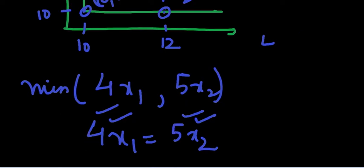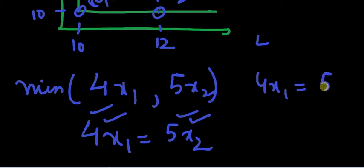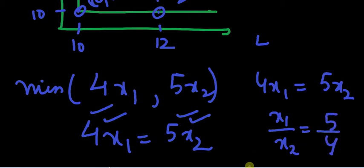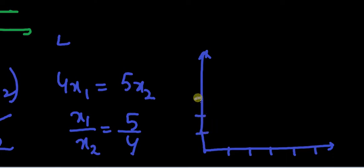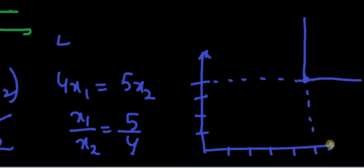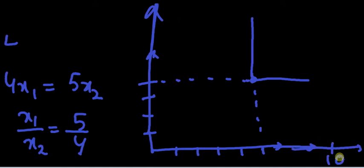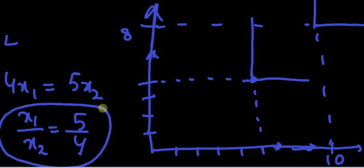If I have to plot this: since 4x1 equals 5x2, we get x1 by x2 equals 5 by 4. So when x1 is 5, x2 is 4 — this is the kink point, and this is my indifference curve. Similarly, when x1 is 10, x2 should be 8 — this is my second indifference curve. So at the kink, x1 should be 5 and x2 should be 4, or x1 is 10 and x2 is 8, or any such multiple.